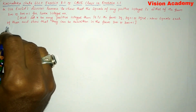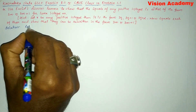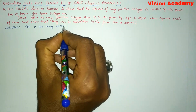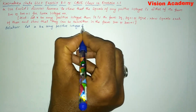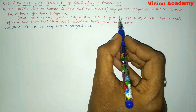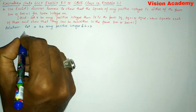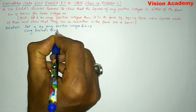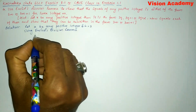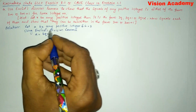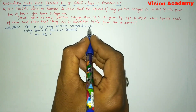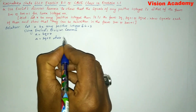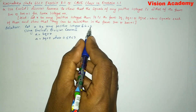Now let us find the solution for the given problem. Let A be any positive integer, and B is equal to 3, because here the divisor is 3. Now using Euclid's division lemma, we can write A is equal to B into Q plus R, where we substitute B as 3, giving A equals 3Q plus R, where 0 is less than or equal to R, which is less than 3.